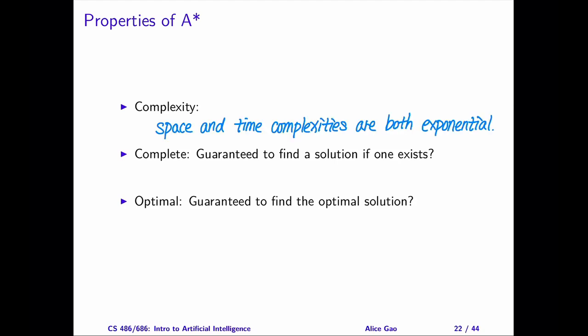Why does using the heuristic function not improve the space and time complexities? Think about it for a minute, and then keep watching. Using the heuristic function does not improve theoretical guarantees, since the guarantees only consider the worst case. The worst case often occurs when the heuristic is uninformative.